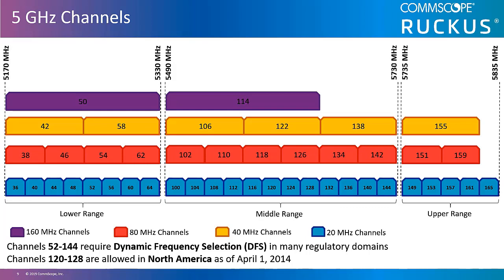Unlike the 2.4 gigahertz channels, 5 gigahertz channels are considered to be non-overlapping. They are all 20 megahertz wide and can be bonded together to form channels as wide as 160 megahertz. Since there are more channels available in 5 gigahertz, there is also more complexity in operations and design.